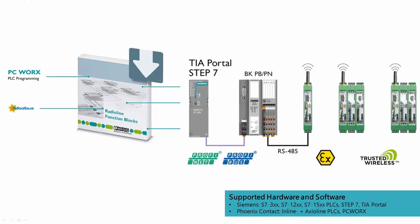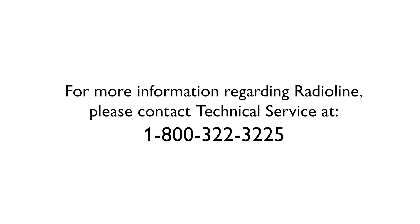For I/O integration in Siemens TIA Portal or PC Works, we offer corresponding function modules. These are available free of charge on the Phoenix Contact homepage in the download area of the Radioline modules. An inline or axial line PROFIBUS or PROFINET BK is only required for interface conversion from Modbus to PROFIBUS or PROFINET. For more information regarding Radioline, please contact Technical Service at 800-322-3225.